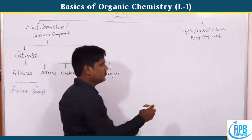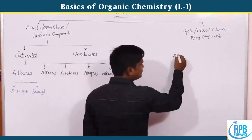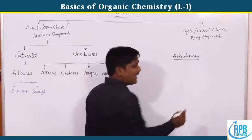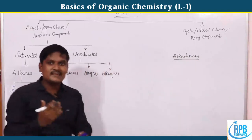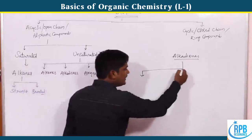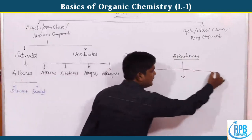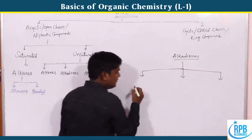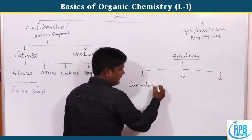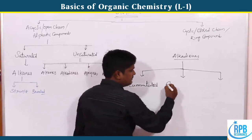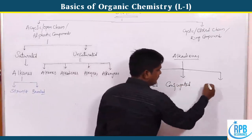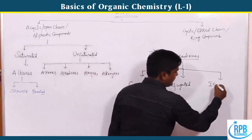Now coming to alkadienes, which are very important. Alkadienes are further classified into three types: cumulated compounds, conjugated compounds, and isolated compounds.